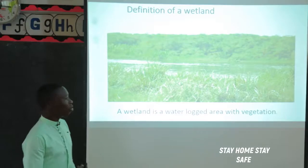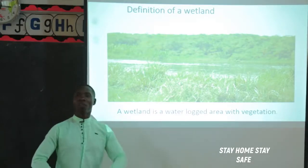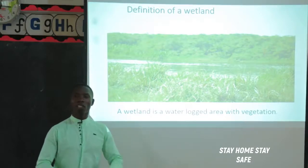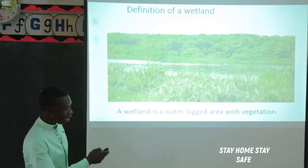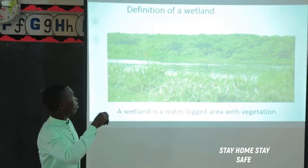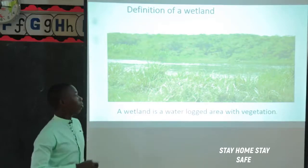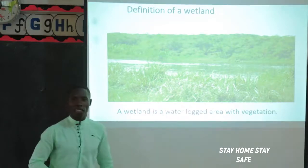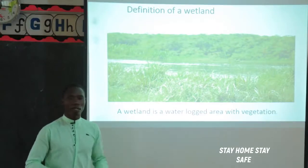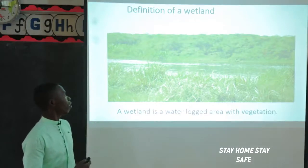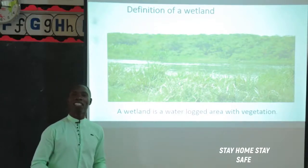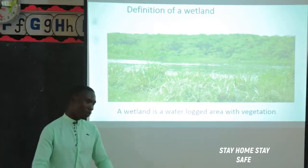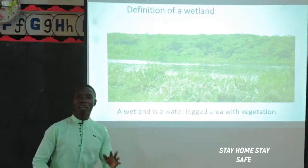We have three types of swamps, and these swamps are grouped according to what is found in them. You can see Papyrus - this is what we call Papyrus reeds. A swamp with Papyrus is known as a Papyrus swamp. We also have forested swamps, which have many trees. And lastly, grassland swamps. In Uganda, we commonly have the Papyrus swamps.